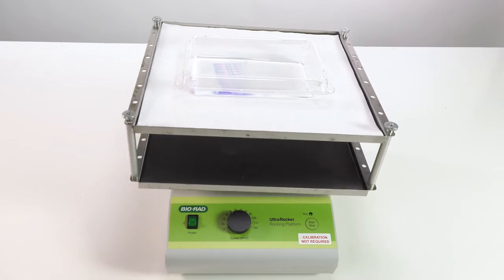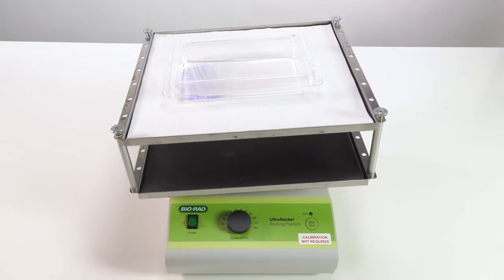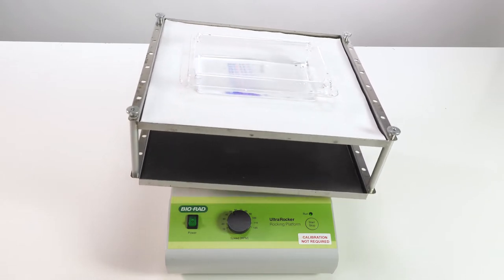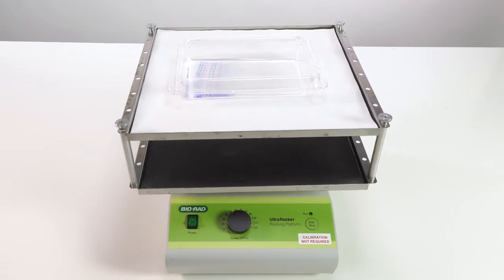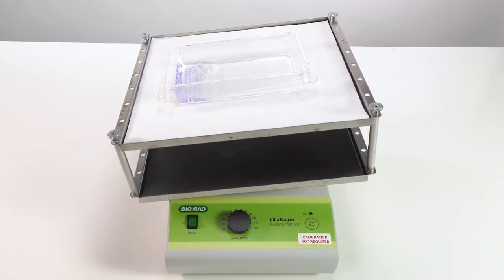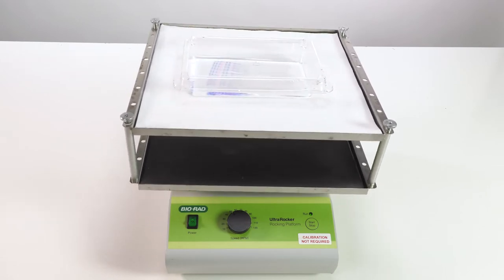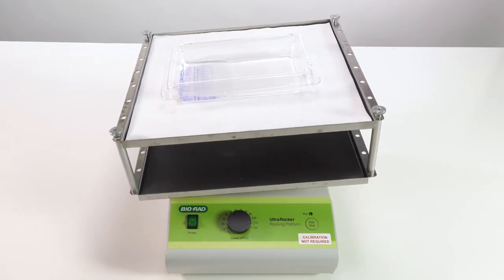After you have removed your gel from the cassette, equilibrate the gel in a tray with transfer buffer for 15 minutes on a rocking platform. This facilitates the removal of salts and detergents. If not removed, the excess salts will cause heat buildup during transfer.